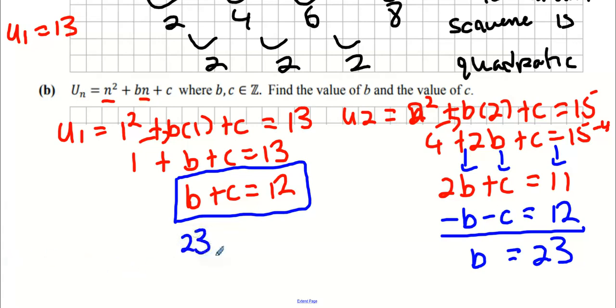If negative 1 is the B answer, what do you think the C answer is? Negative 1 plus C equals 12, so C is 12 minus negative 1. C is 13.